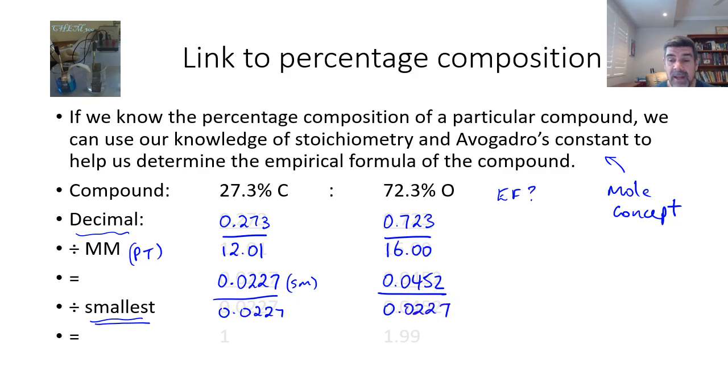So therefore what I'm going to do is divide both of these by the same number, 0.0227. And when I do that, what I find is obviously these ones are going to cancel out and give me 1. But these two are going to produce a number of 1.99. Now this is close enough to a ratio of 1 to 2. And you may notice that the percentage is not exactly 100. It doesn't add up to 100%. It's pretty close. So obviously sometimes some minor errors do creep in and they do mean that we end up with some slight error in our number. And that's why I thought I'd include this for you as an example.